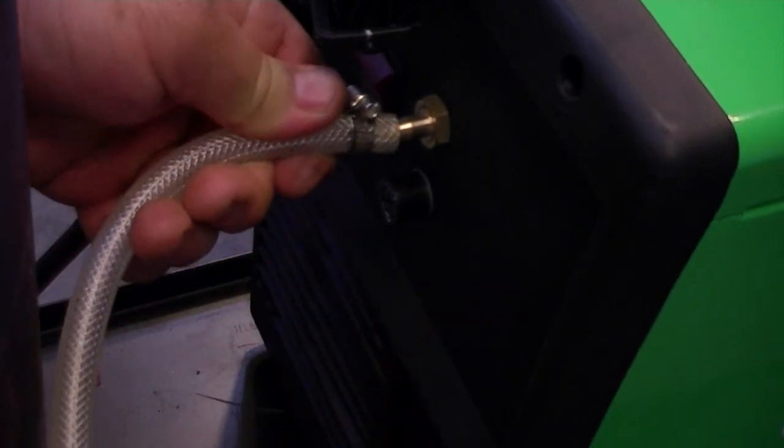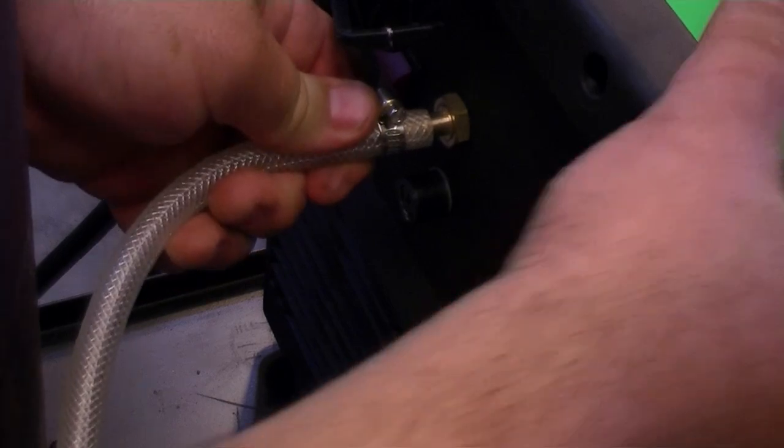Now install the tubing and clamp onto the barbed fitting located on the rear of the unit. Again fully seat the tubing and then tighten the clamp.